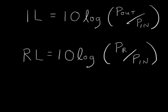You can express these ratios not as linear fractions but as dB. The dB ratio of output to input power is called insertion loss, and the dB ratio of reflected to input power is called return loss. These are the things that the network analyzer measures — you connect it to your device and it gives you a value in dB.